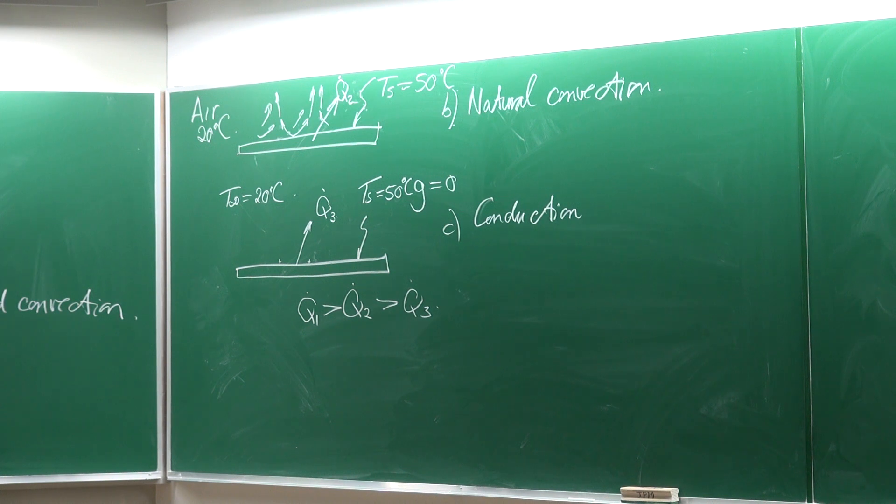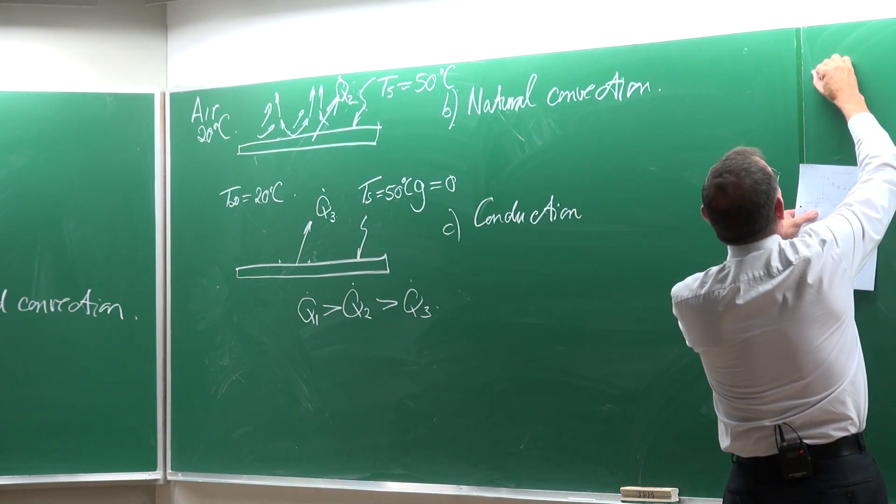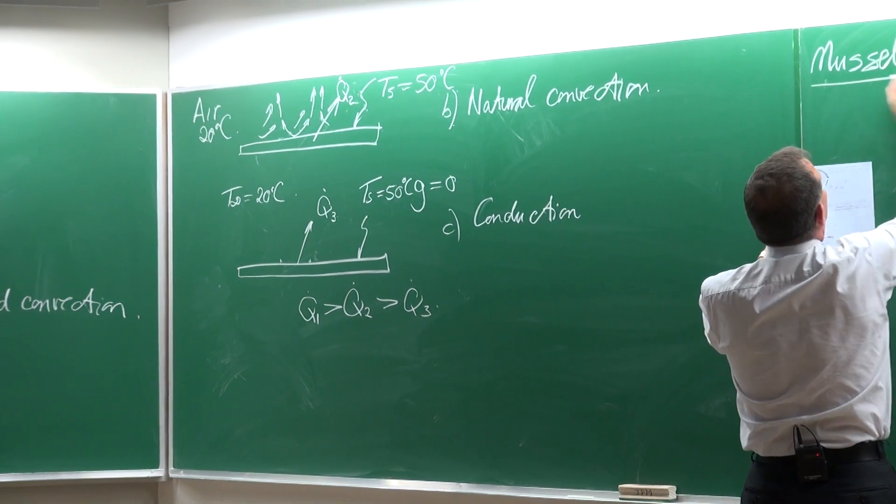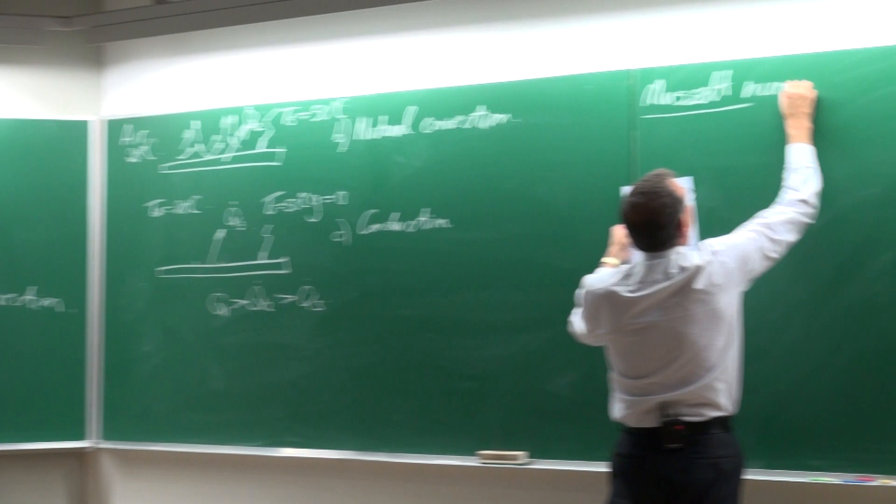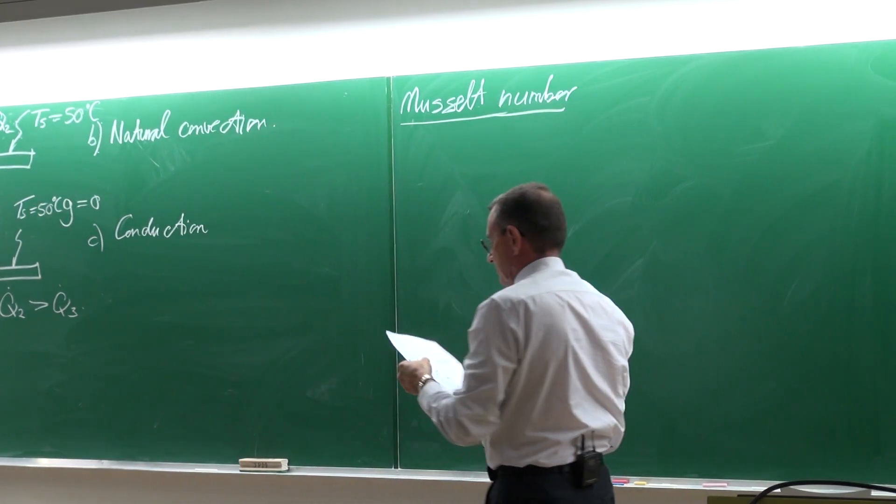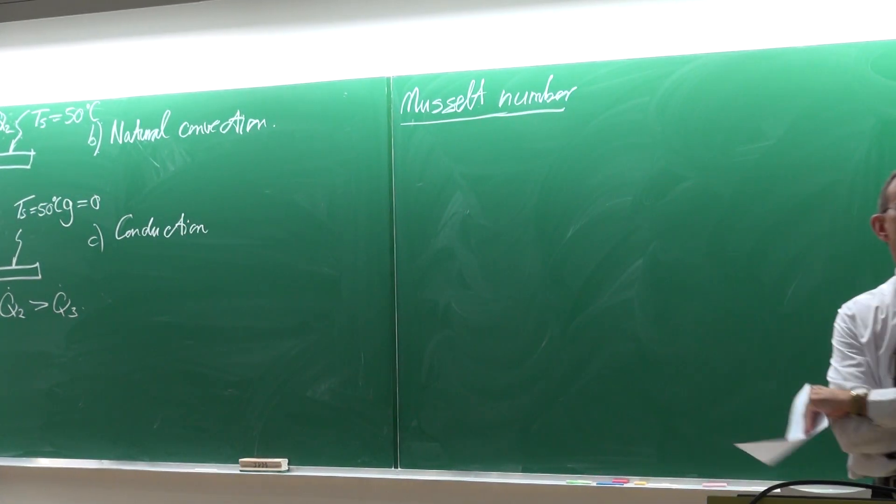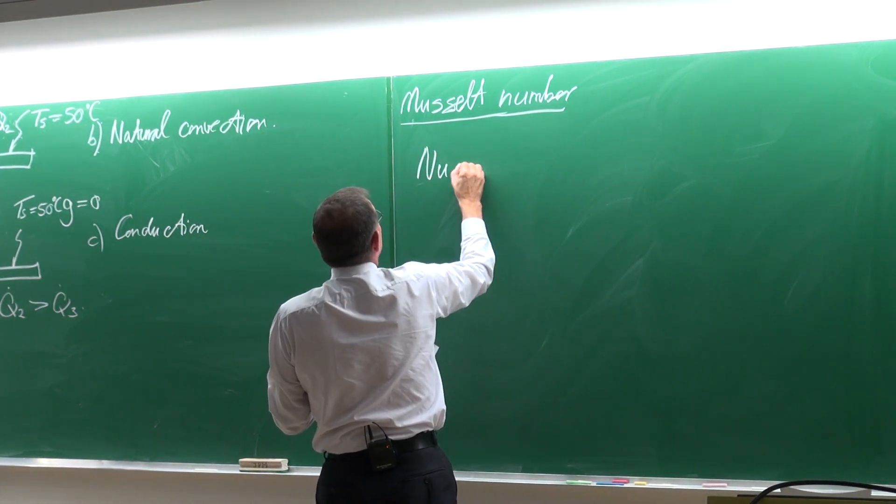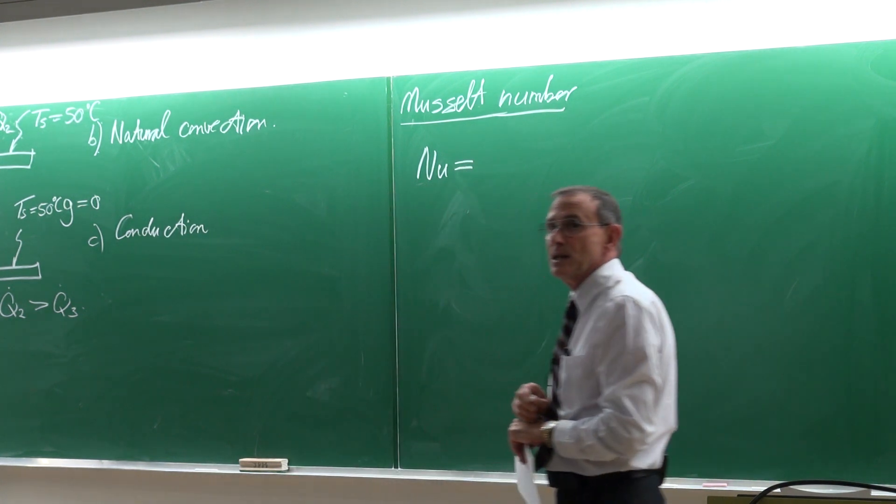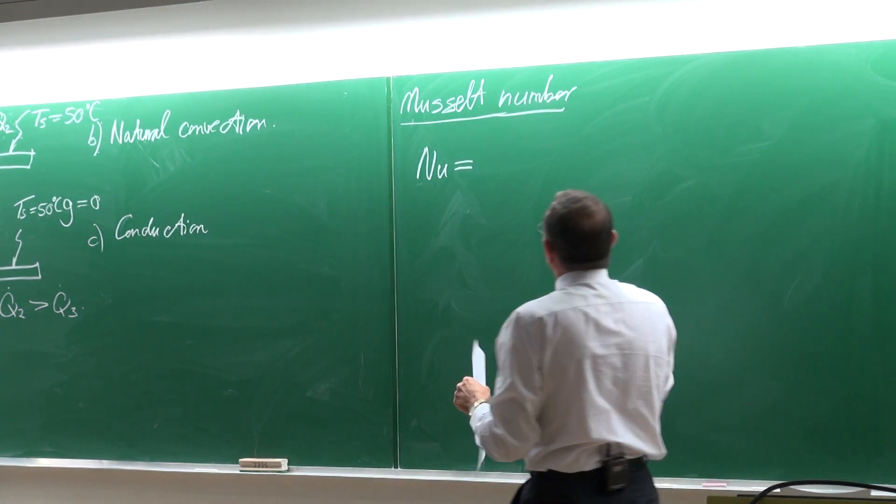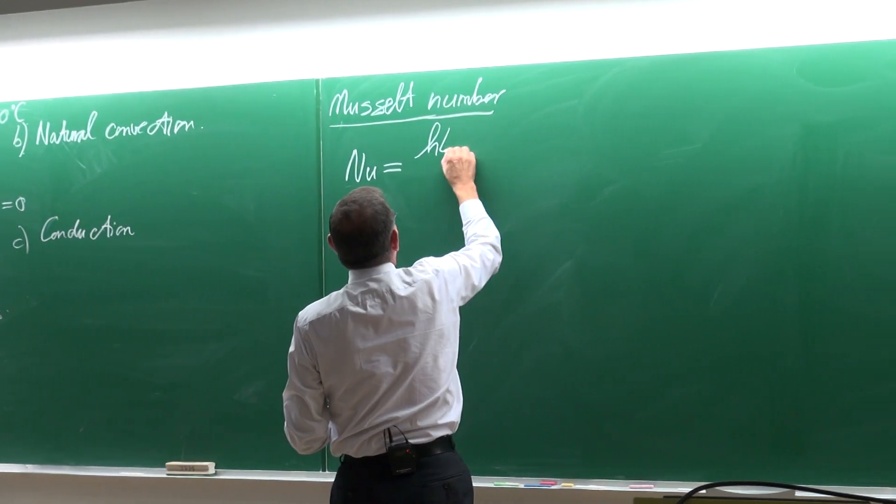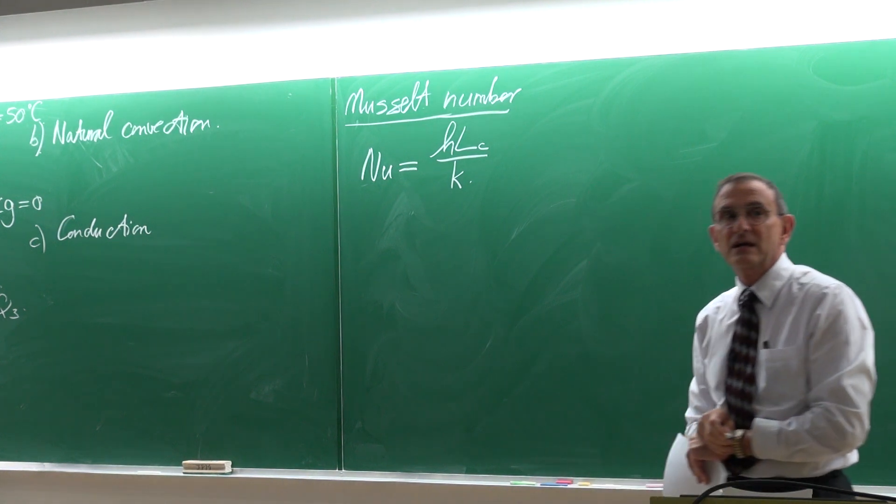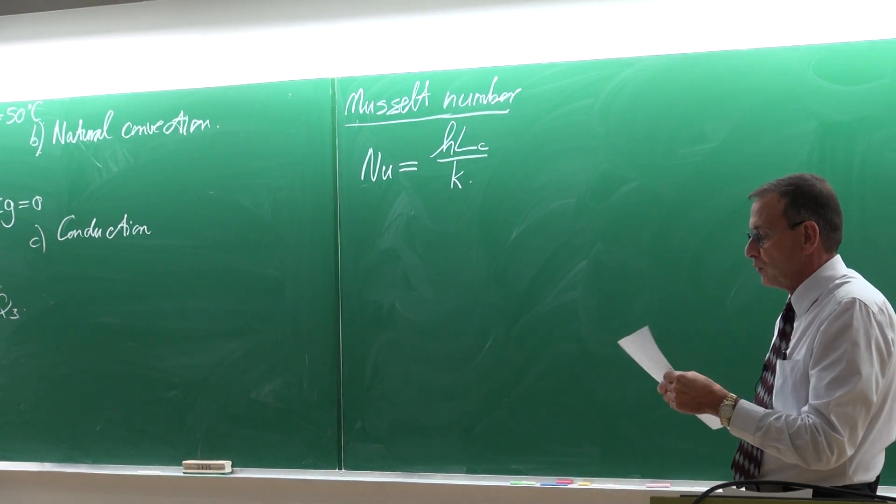And that brings us then to the whole principle of the Nusselt number. And the Nusselt number is a dimensionless number and it is equal to the heat transfer coefficient multiplied by a characteristic length divided by the thermal conductivity.